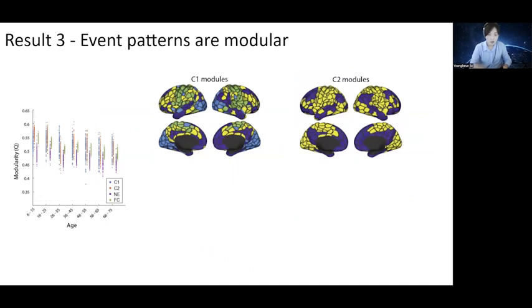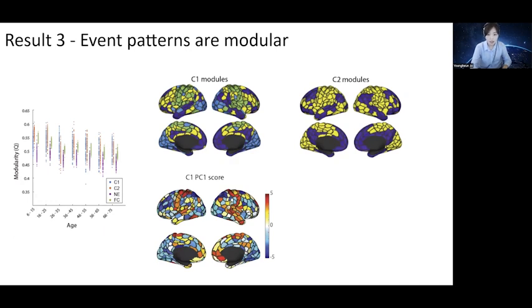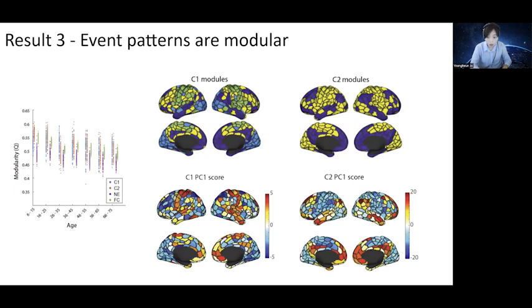Another finding was that event patterns, like static FC, are modular. Here, on the left plot, the green dots are the modularities of static conventional functional connectivity matrices. The purple dots are for non-events and the blue and orange dots are for C1 and C2. These results are also aligned with previous literature suggesting that the modularity of functional connectivity decreases with age. Compared to the modularity of full brain FC, C1 and C2 are more modular than FC, whereas non-events were less modular than FC. When we used modularity maximization, we identified four modules in C1 and two modules in C2.